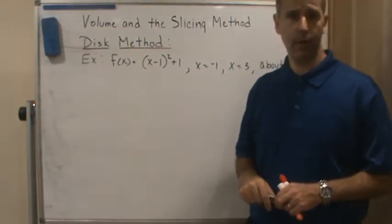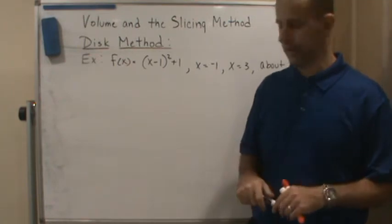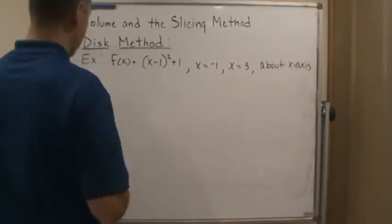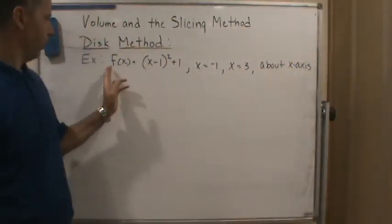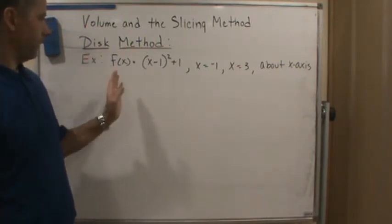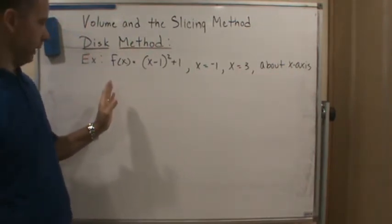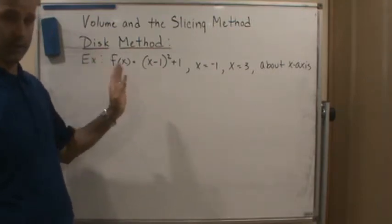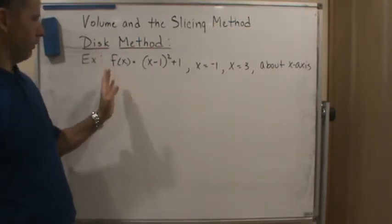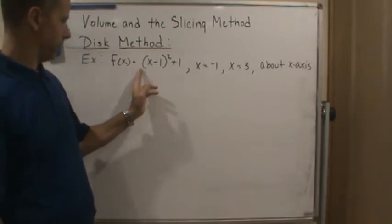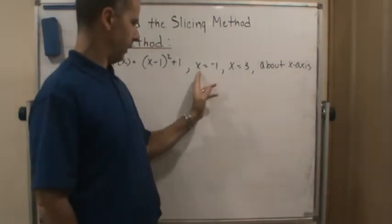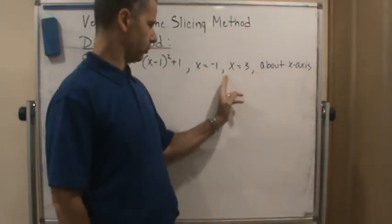Okay, so let's do an example of the disk method. We want to find the volume of the solid of revolution bounded by this region, so it's bounded by this function, bounded by this line x equals 1 to x equals 3.